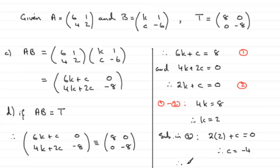So at the end of the day we've got C equals minus 4 and K equals 2.